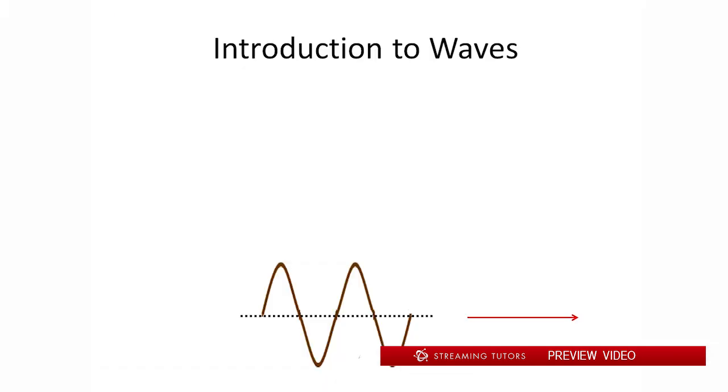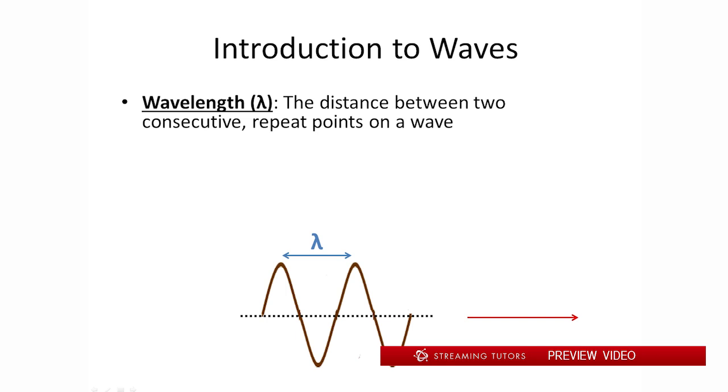To start with, we're going to look at waves. This is just a basic sine wave on the bottom here. We can describe it with the following three properties. First is the wavelength. The wavelength of any wave is just the distance between two consecutive points. For example, on the example down here, our wavelength is just the distance between the two maximum peaks on the wave.